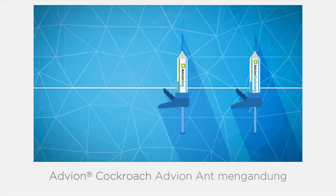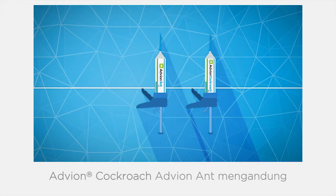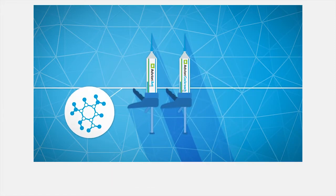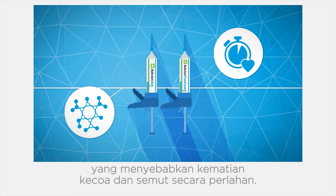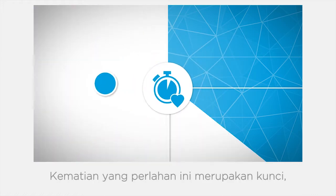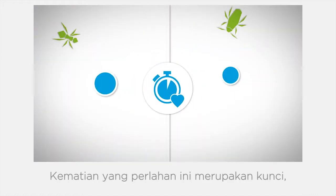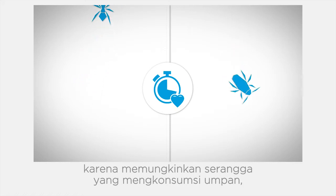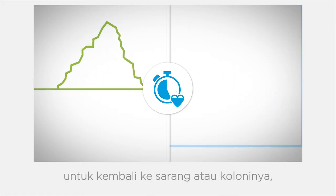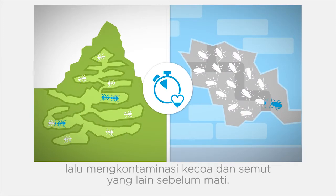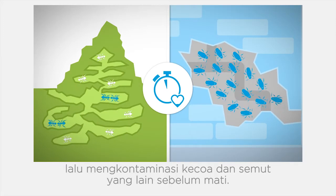Adveon ant and cockroach gel baits contain a non-repellent active ingredient called indoxacarb, which causes a delay in cockroach and ant mortality. This delayed mortality is key, as it allows the insect to consume the bait and return to its harbourage site or colony to contaminate other cockroaches and ants before dying.